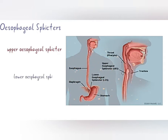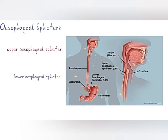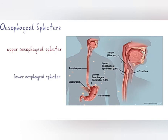Lower esophageal sphincter. It is a physiological sphincter located at the gastroesophageal junction between the stomach and esophagus. The gastroesophageal junction is situated to the left of the T10 vertebral level and is marked by the change from esophageal to gastric mucosa.